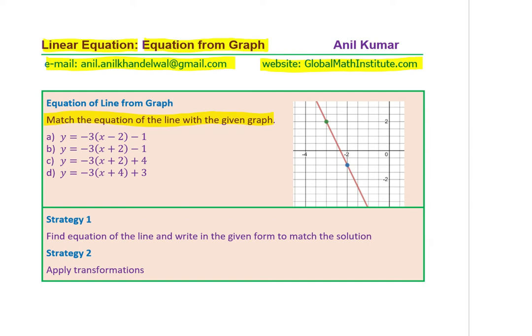The question is: match the equation of the line with the following graph. The graph is given to you, with a line going through two points. You need to find which of these equations match with the equation of the line. The four choices are given in transformed form, so follow your strategies and answer the question.